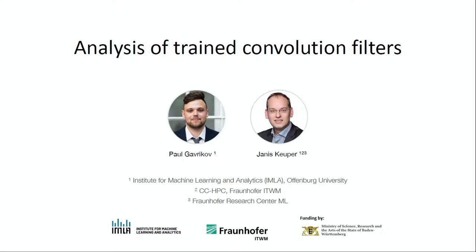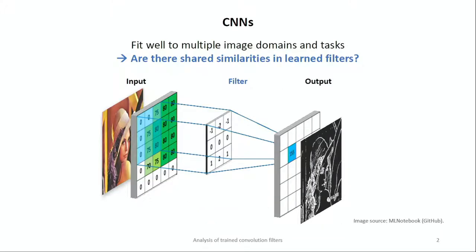We try to analyze convolutional neural networks. You have some input image, you apply a convolution filter, and you end up with an output. If you do this hundreds or thousands of times in your network, you can produce interesting latent representations that you can further classify or do other predictions with. The question is, since there are so many filters and CNNs can be applied for all kinds of tasks and datasets — from medical to natural photos — are there any shared similarities that you could potentially exploit?